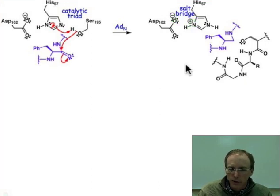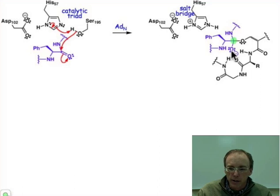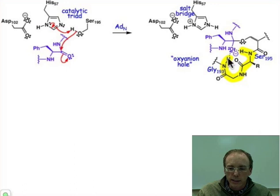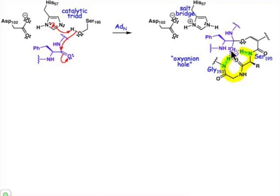The serine group has added in to make a tetrahedral intermediate at what was the carbonyl carbon, and the oxyanion — the O-minus — is stabilized by the amide residues from serine 195 over to residue 193, the glycine NH bond. Those two NH bonds are hydrogen bond donors, and they're pointing right in at that oxyanion to help stabilize that intermediate.